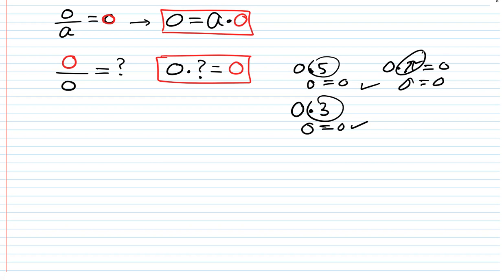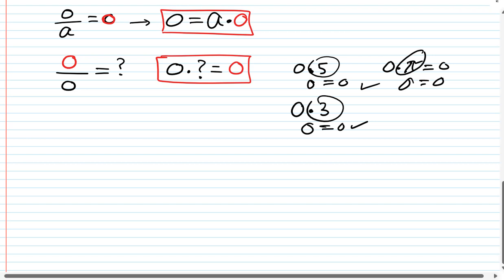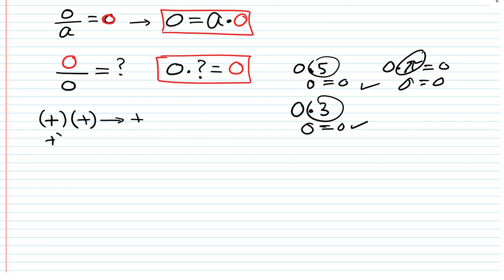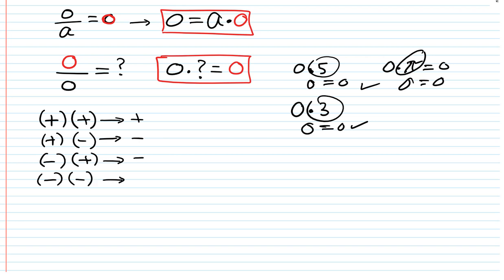When it comes to signed numbers: a positive times a positive is positive; a positive times a negative is negative; a negative times a positive is negative; and a negative times a negative is positive. These same sign rules hold for division as well.